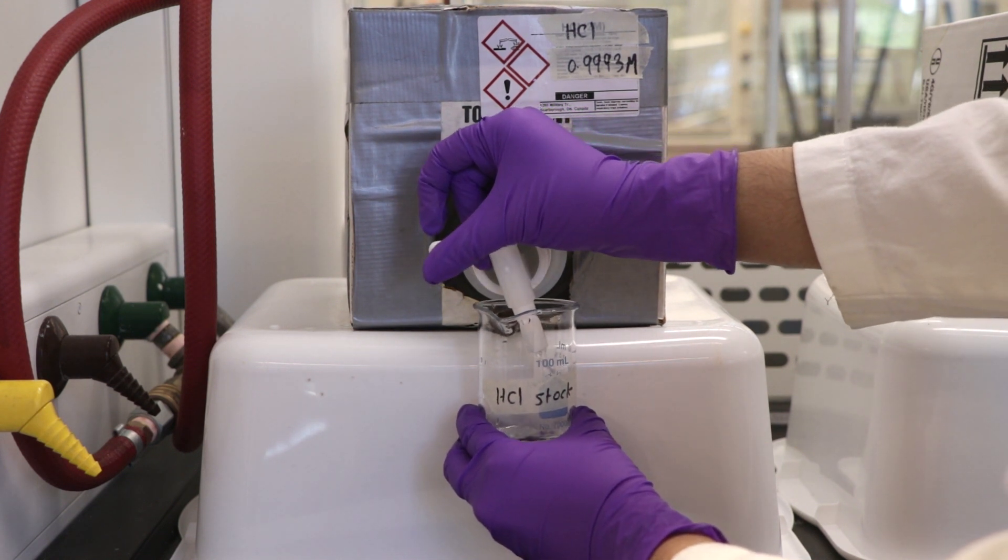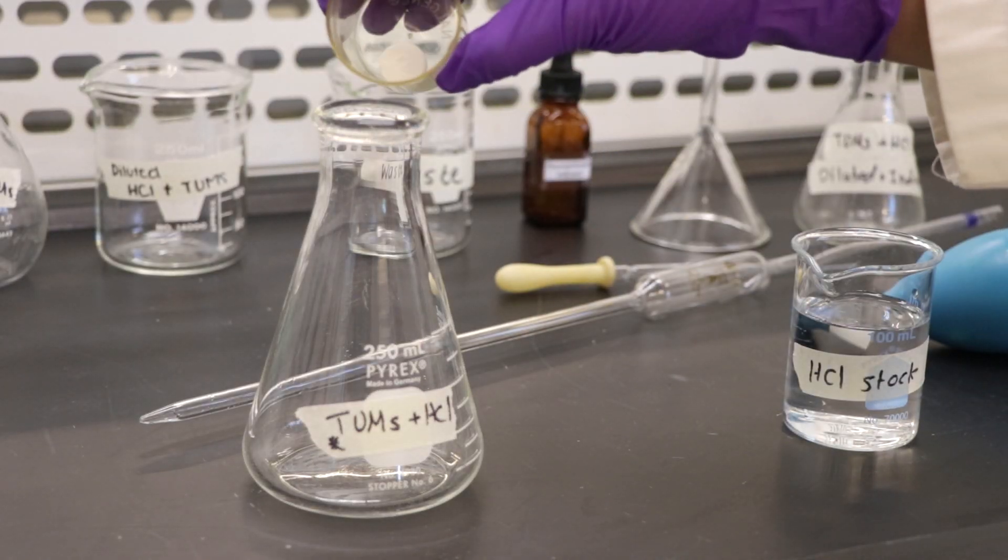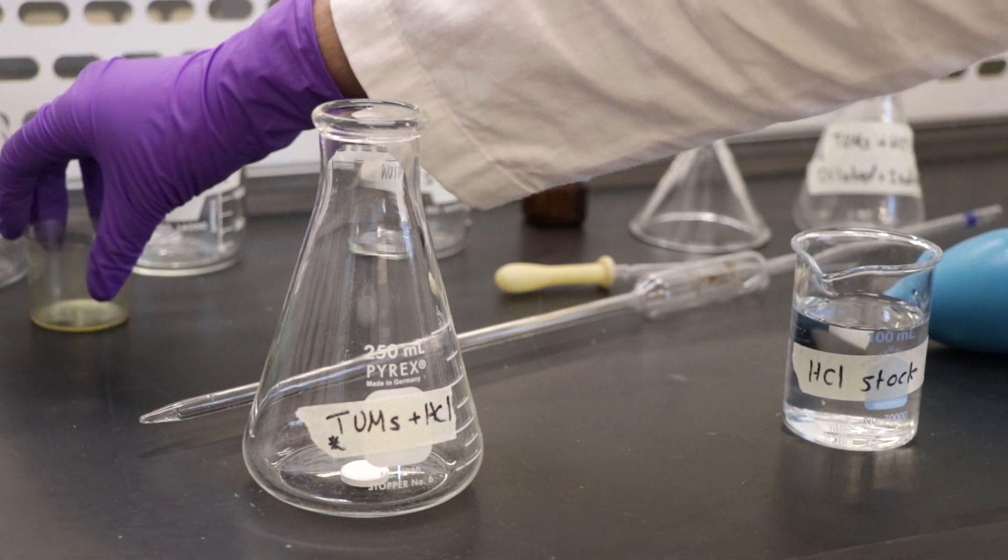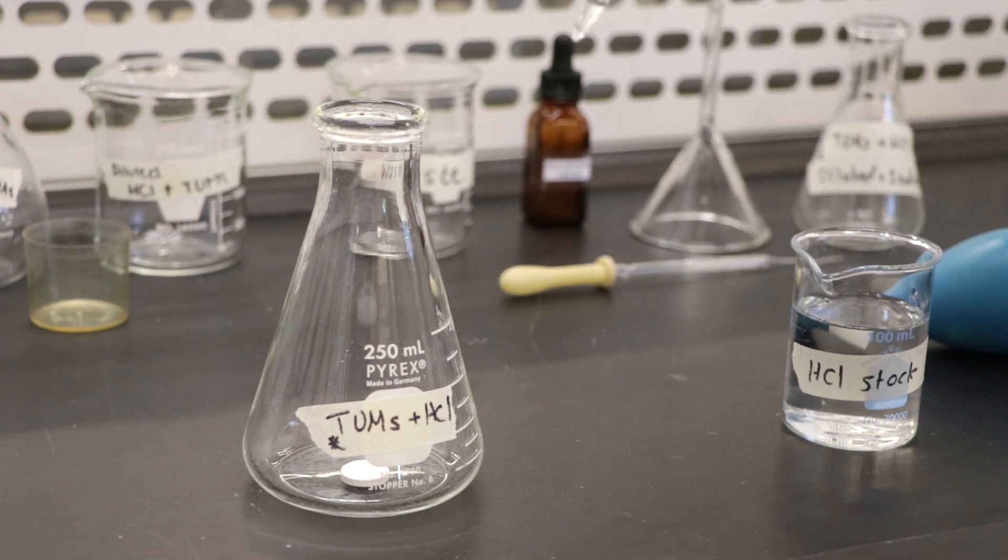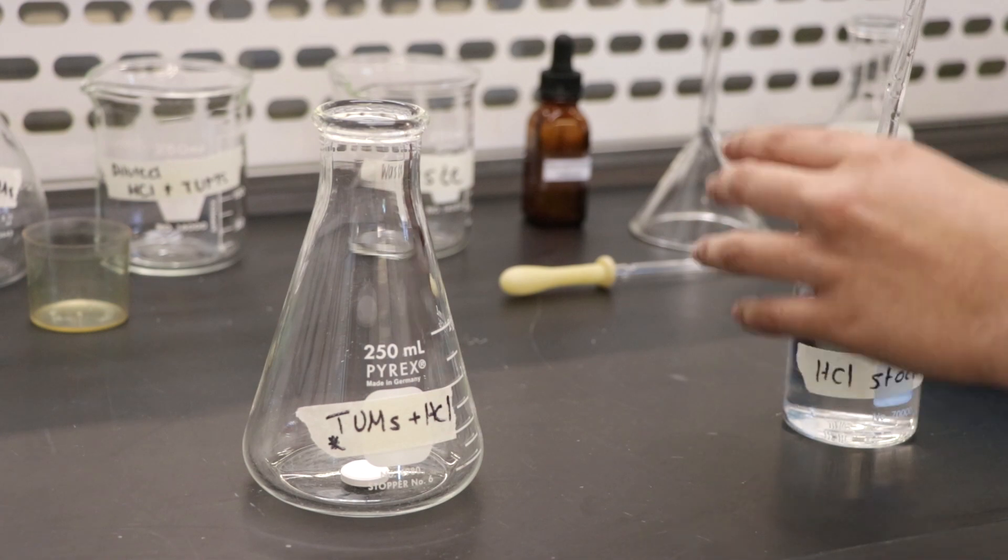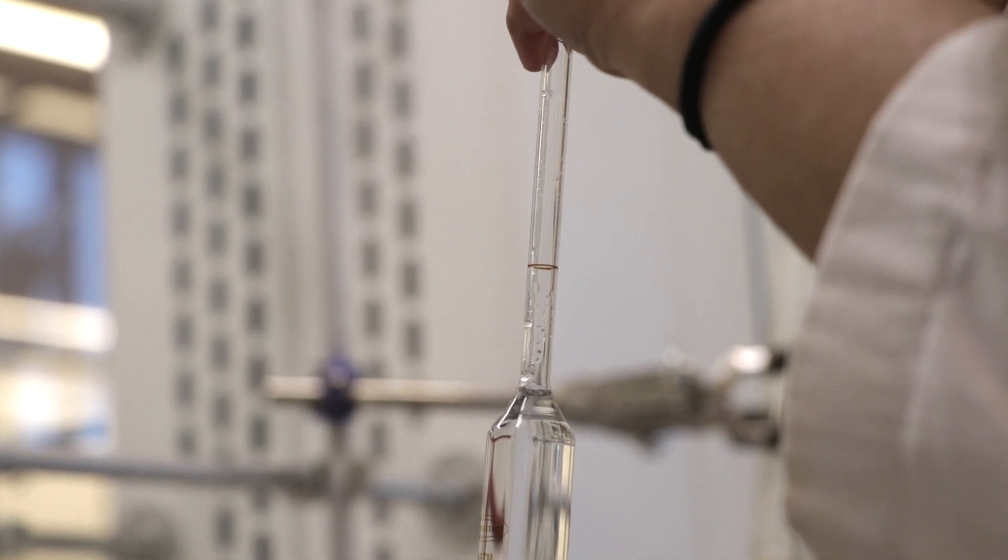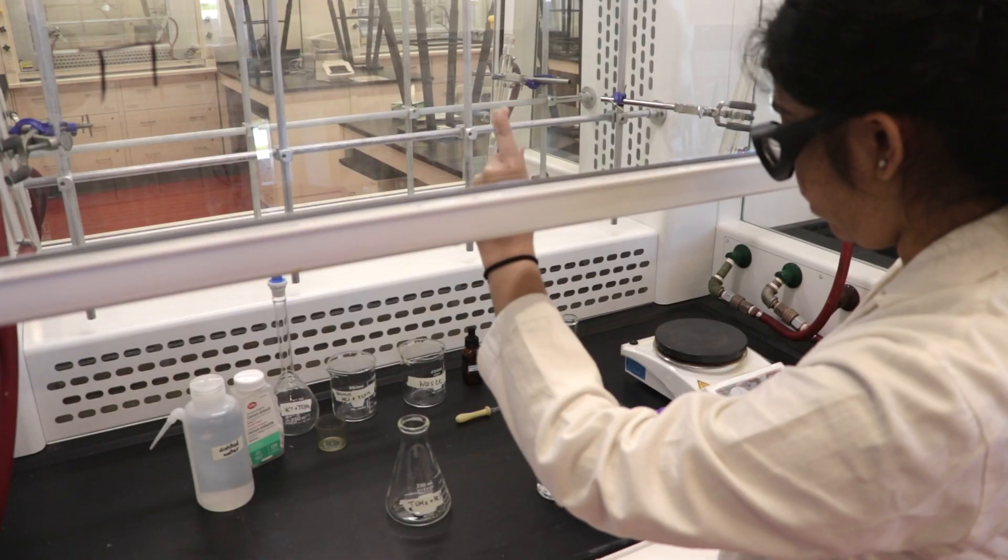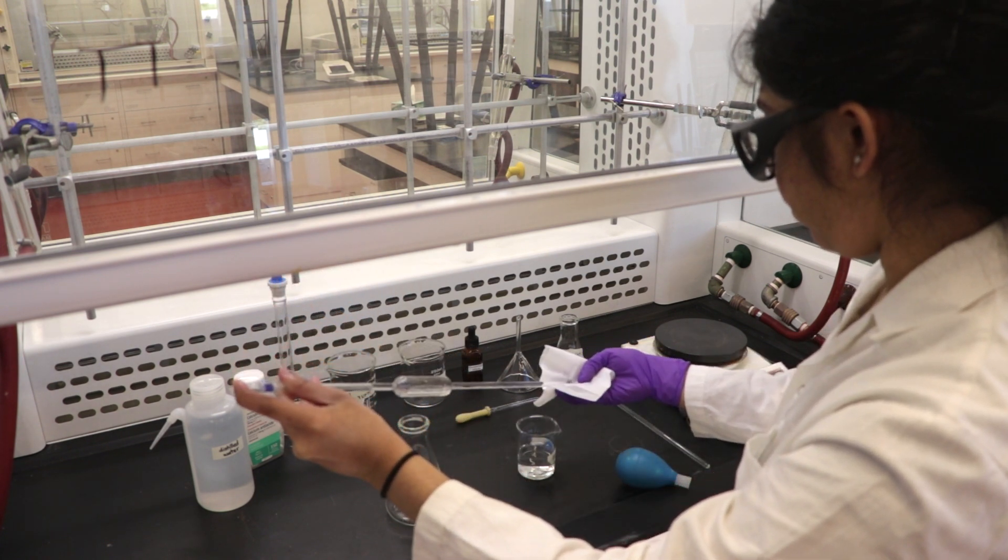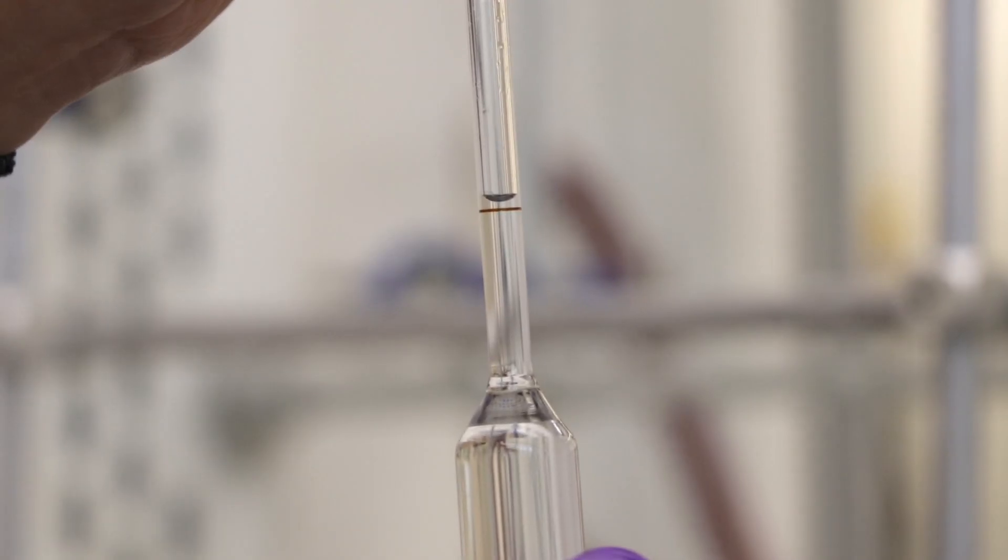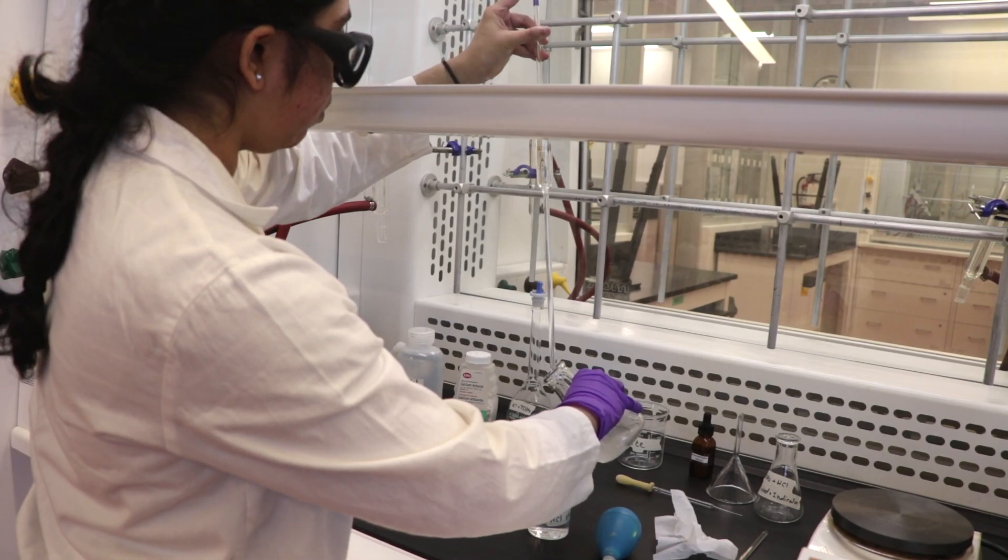Drop the Tums into the Erlenmeyer flask before pipetting. Clean the volumetric pipette three times with distilled water and once with stock HCl. Pipette 100 milliliters of HCl into the flask with the tablet. Be sure not to wear a glove on your non-dominant hand. Pipette above the mark, then wipe the bottom of the pipette with a Kimwipe to avoid any excess liquid, then lower the meniscus to the mark.